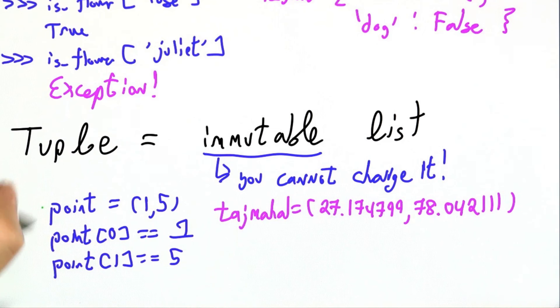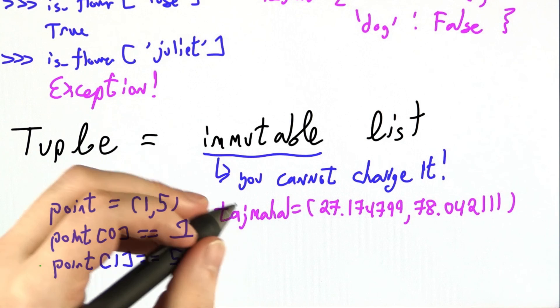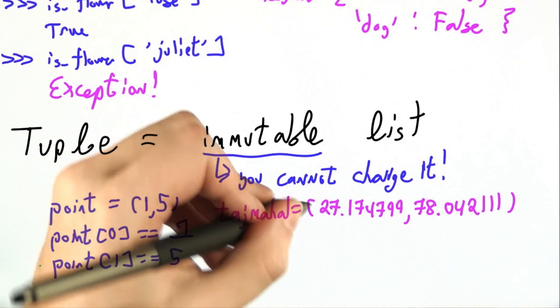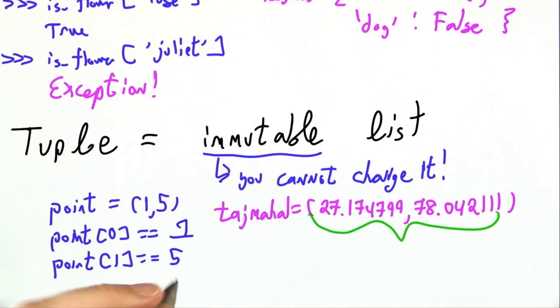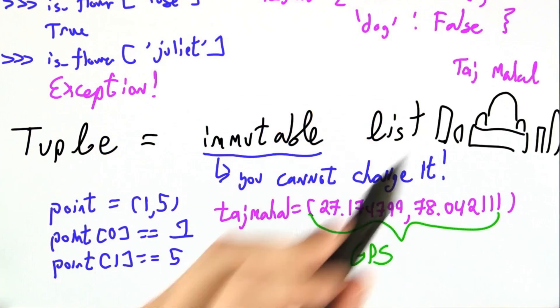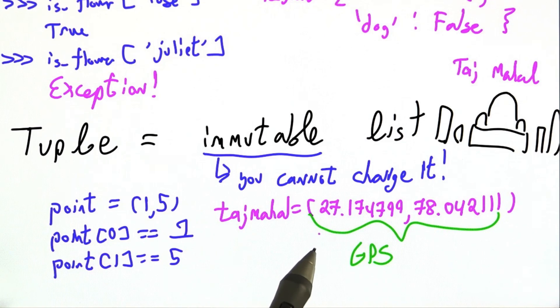And while Cartesian points may not be super exciting, many of you may have done navigation or taken long trips and used GPS coordinates or longitude and latitude. The Taj Mahal is a UNESCO World Heritage site in India. These are its actual GPS coordinates. Go check it out.